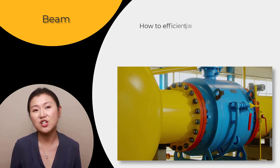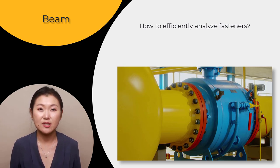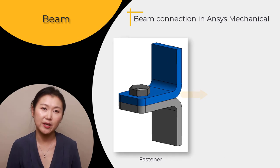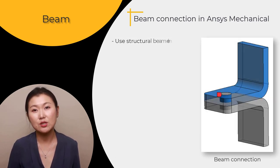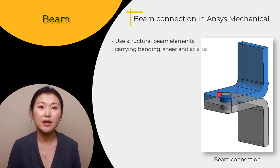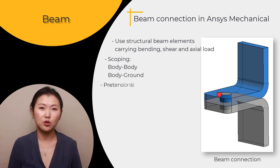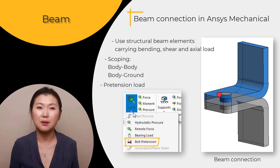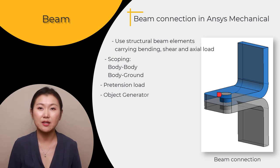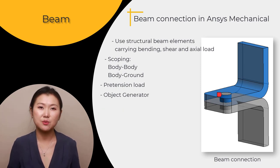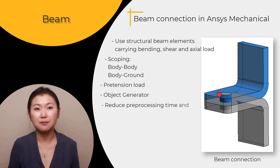In that case, how can we efficiently analyze such fasteners? The answer is to make use of beam connections. Beam connections in ANSYS Mechanical offer a simplified yet efficient way to represent fasteners. They use structural beam elements that can carry bending load in addition to shear and axial loads. Similar to a spring connection, beam connections can be used to connect two bodies together or to connect a body to ground. Pretension load, used to model a bolt under pretension, can also be applied on beam connections. Identical fasteners in the model can be quickly represented with beam connections using the object generator tool.